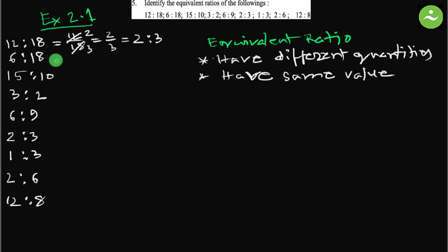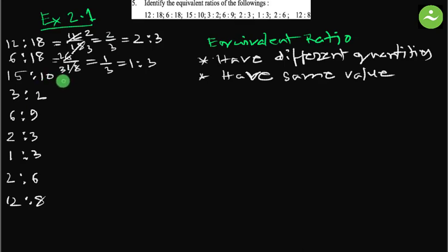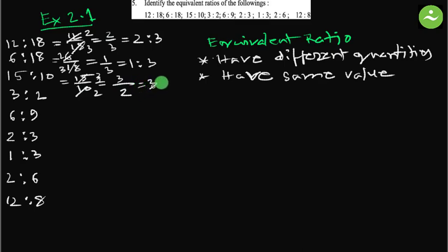6 is to 18 equals to 6 by 18. We divide both by 6 — this becomes 1 and this becomes 3 — so 1 by 3, equals to 1 is to 3. 15 is to 10 equals to 15 by 10. We divide both by 5 — this becomes 3 and this becomes 2 — equals to 3 by 2, equals to 3 is to 2.